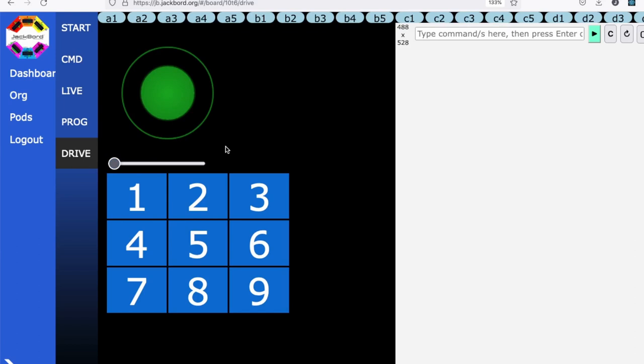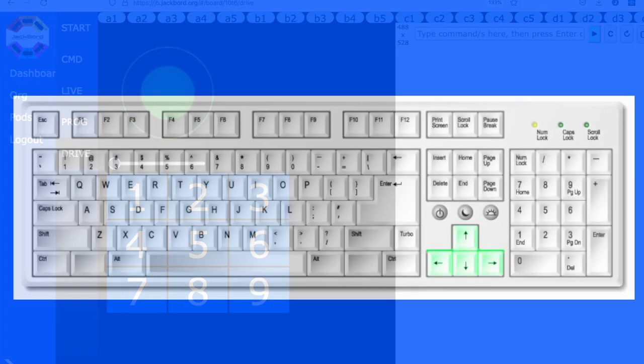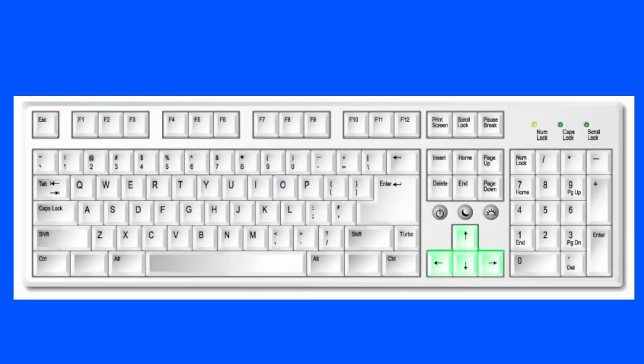The other way you can drive the JackBoard from the drive page is using your keyboard. And we'll look at that next. Another way you can drive the JackBoard from the drive page is using the arrow keys on your keyboard. And those are shown in green in this picture. And as you'd expect, the up arrow makes you go forward, the down arrow makes you go back, the left arrow makes you go left, and the right arrow makes you go right. The sensitivity slider also affects the action of these keys.